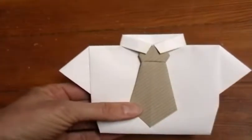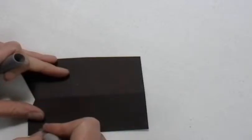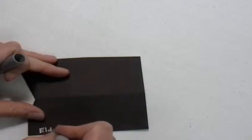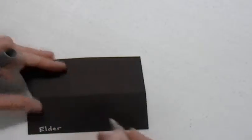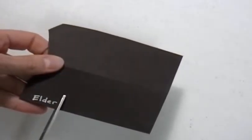Now we'll put a tag on there. Now I'm just going to use a piece of scrap black construction paper and write with a gel pen or something that will write on dark paper. I'll just put Elder. Cut out this little tag.